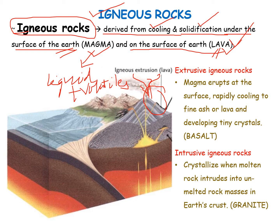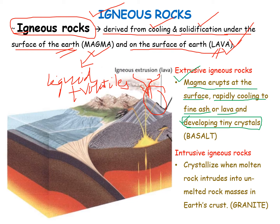The first type is the extrusive igneous rock, which says that magma erupts at the surface, rapidly cooling to fine ash or lava and developing tiny crystals. The magma that comes to the surface of the earth forms a particular type of rock developing tiny crystals. Those are called extrusive igneous rocks. The example of extrusive igneous rock is the basaltic rock, which is found in the oceanic crust.